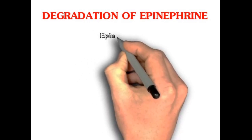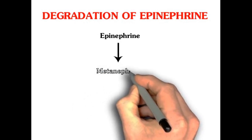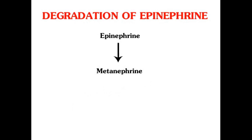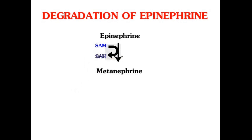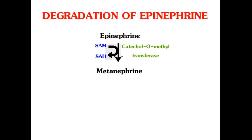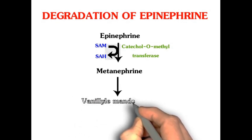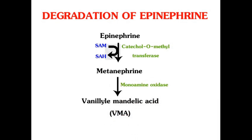Now we'll see the degradation of epinephrine. Epinephrine will be converted into metanephrine; S-adenosyl methionine is converted into S-adenosyl homocysteine by the enzyme catechol-O-methyltransferase (COMT). Then metanephrine will be converted into vanillylmandelic acid (VMA) by the enzyme monoamine oxidase (MAO).